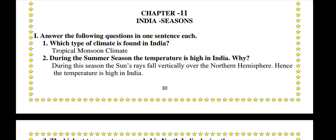Chapter 11: India Seasons. Answer the following questions in one sentence each. Which type of climate is found in India? Tropical monsoon climate.